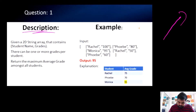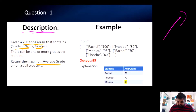Essentially we were given a 2D string array containing student names and grades, and we need to determine which student received the maximum average grade amongst all students.